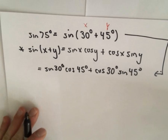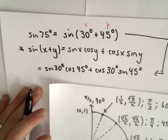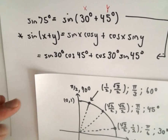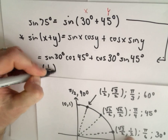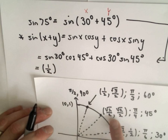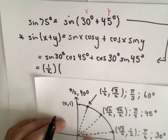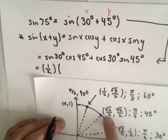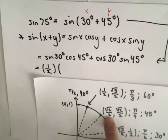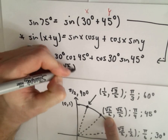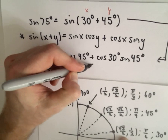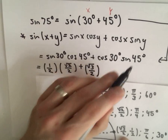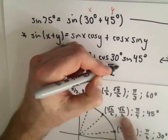Now it's just a matter of using the unit circle. Sine of 30 degrees — I find the angle corresponding to 30 degrees, and since sine is the y value, sine of 30 degrees is 1/2. Cosine of 45 degrees — cosine is represented by the x-coordinate on the unit circle — that'll be the square root of 2 over 2. Cosine of 30 degrees is going to be the square root of 3 over 2. And sine of 45 degrees is also the square root of 2 over 2.